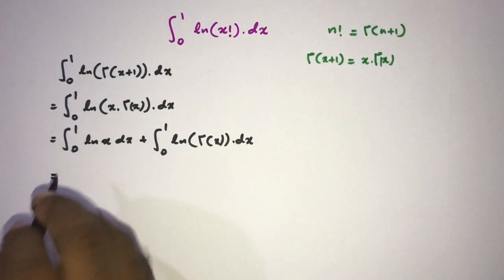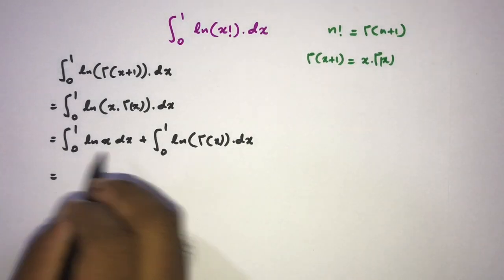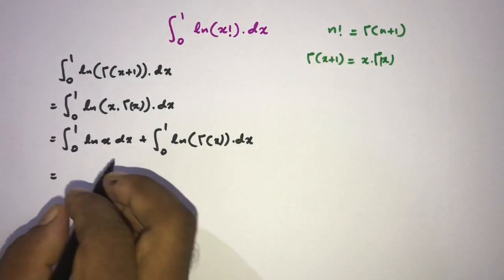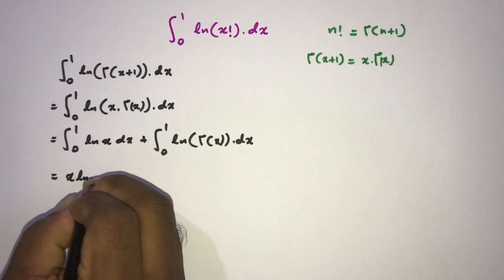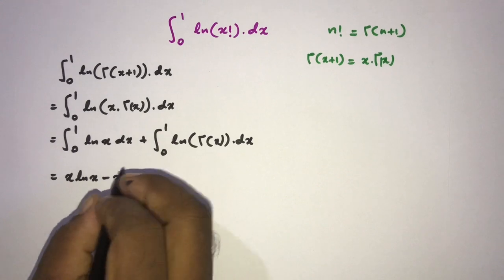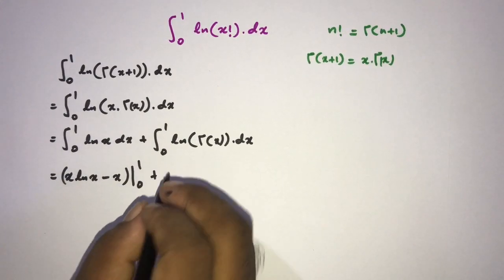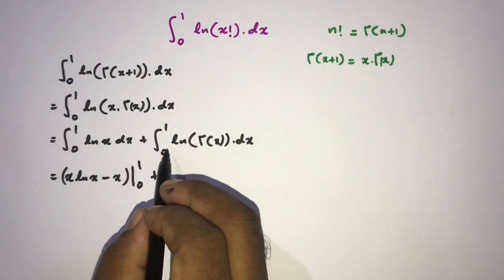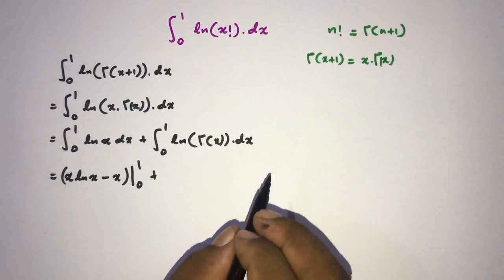Then here, this simple integral we can evaluate by using integration by parts IBP. If we evaluate this, we know we have x times natural log of x minus x from 0 to 1, plus another interesting integral: integral from 0 to 1, natural log of gamma of x dx.